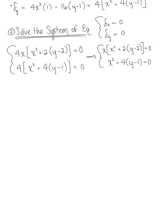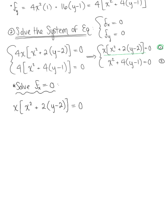At this point, you want to decide which equation to work with. It's going to be easier to use something that's already factored, so let's work with the first order partial with respect to x set equal to zero — solving for both x and y. We have x multiplied by (x squared plus 2 times (y minus 2)) equals 0. By the zero factor property, we have two cases: x equals 0, and x squared plus 2 times (y minus 2) equals 0.